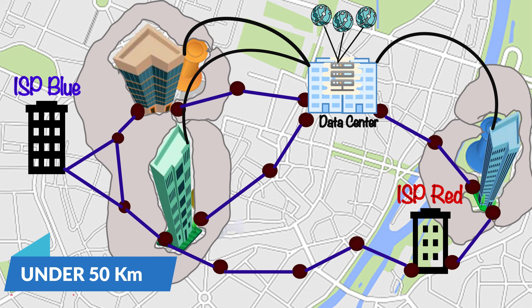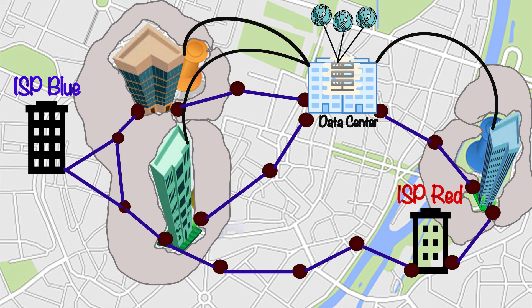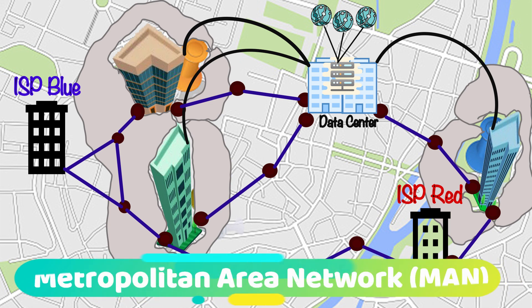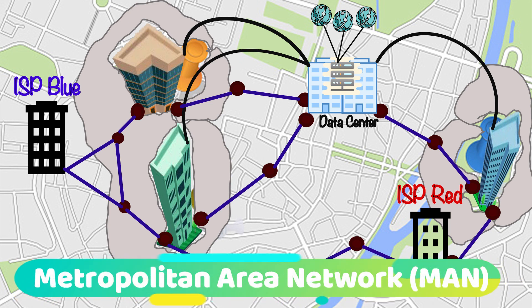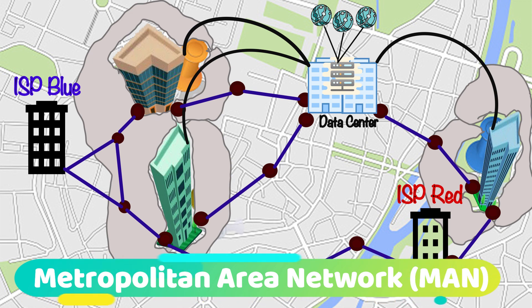In summary, when we connect multiple branch offices among themselves in the same city or nearby different cities, we basically create a metropolitan area network. Now let's move on to our next topic, which is wide area network and internet.